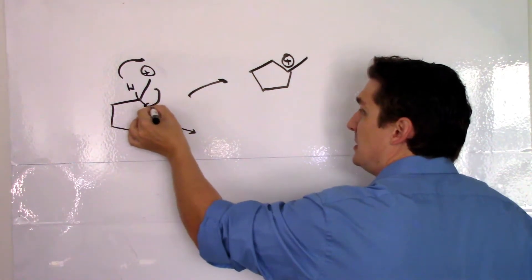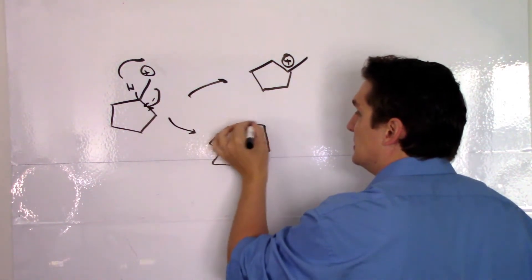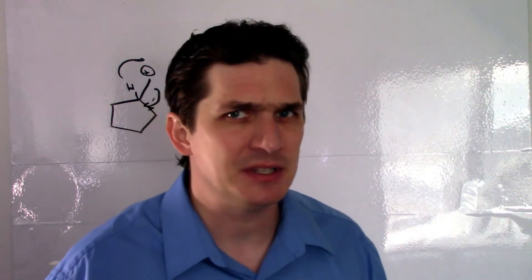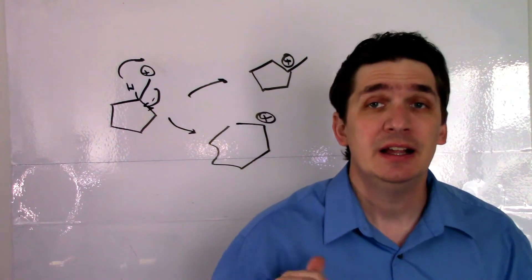And when we break this bond and shift this up, this ends up giving us cyclohexene. Now you may sit back and say, well, this is a secondary versus a tertiary - why would the secondary be more stable than the tertiary? It has to do with ring strain. Your cyclopentane is more strained than the cyclohexane.